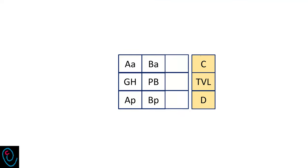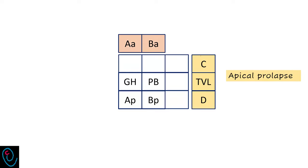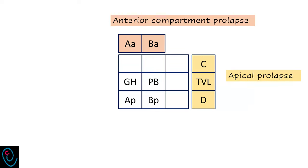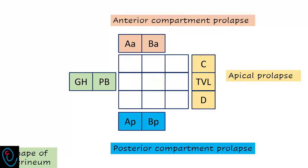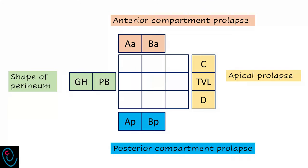Three distances assess the stage of apical prolapse. Two points on the anterior vaginal wall assess the stage of anterior compartment prolapse. Another two points on the posterior vaginal wall assess the stage of posterior compartment prolapse. And two external measurements assess the shape of the perineum.